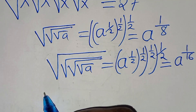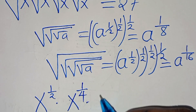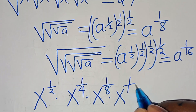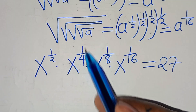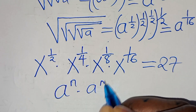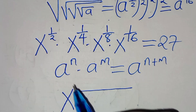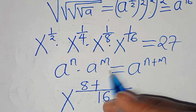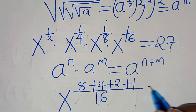This means we have x to the power of one half, multiplied by x to the power of one quarter, times x to the power of one eighth, times x to the power of one sixteenth, all equal to 27. Using the exponent addition property with LCD of 16: 8 over 16 plus 4 over 16 plus 2 over 16 plus 1 over 16 gives 15 over 16. So x to the power of 15 over 16 equals 27.